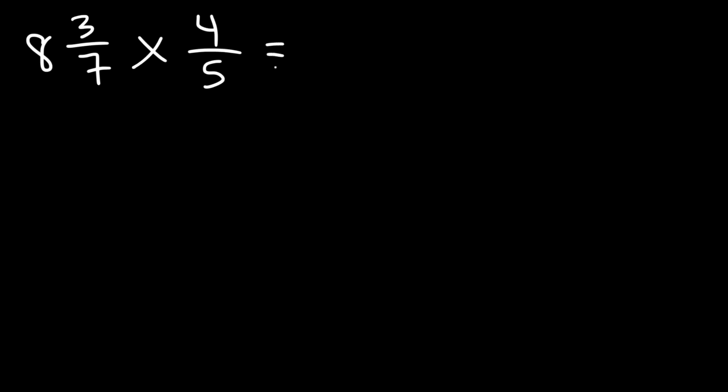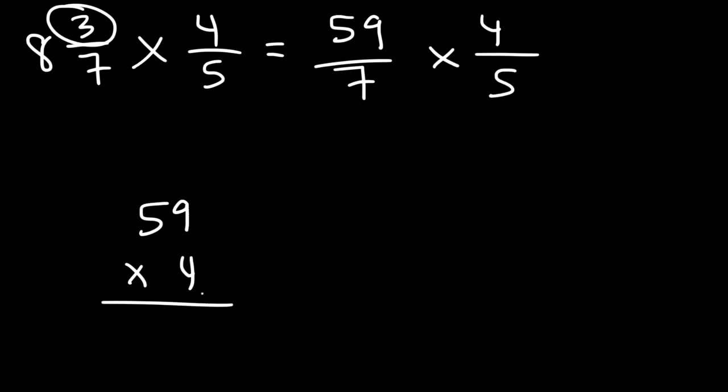So let's work on another example: 8 and 3/7, let's multiply that by 4/5. Let's convert this into an improper fraction. So we have 8 times 7 which is 56 plus 3, and so that's going to be 59.